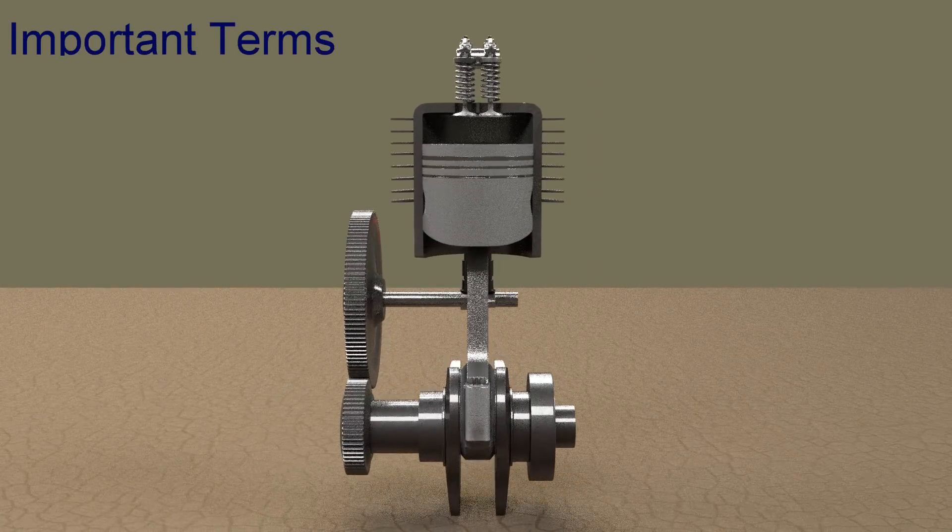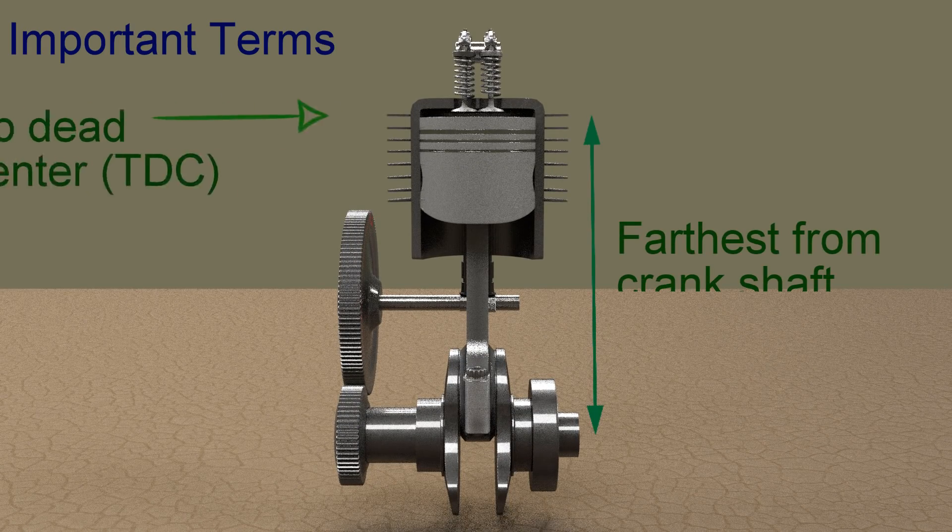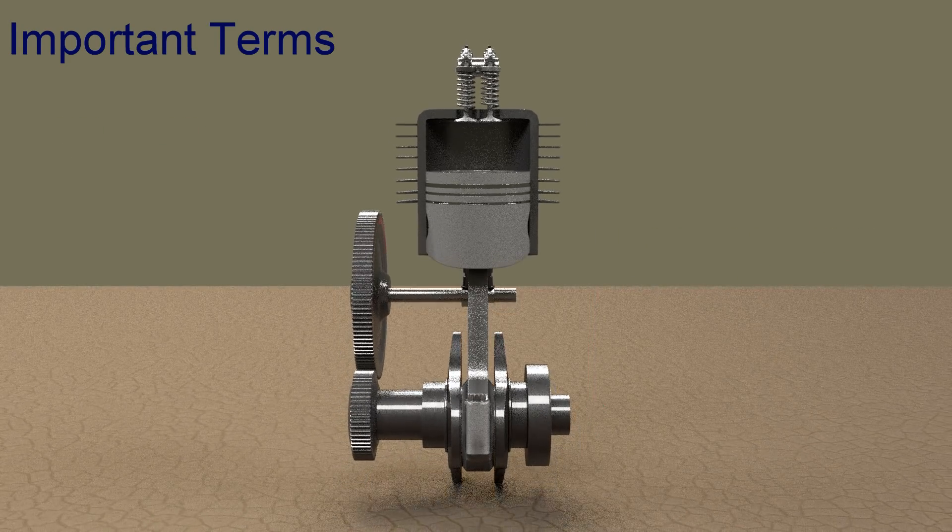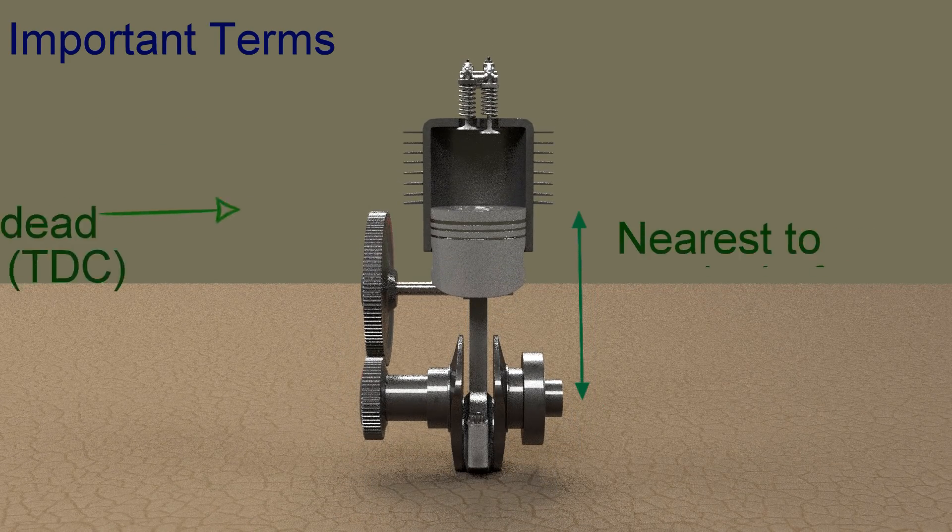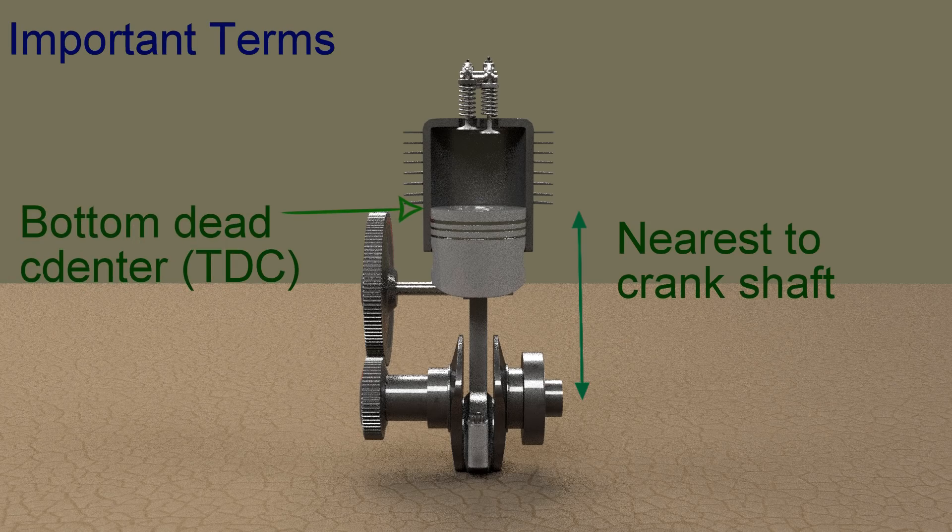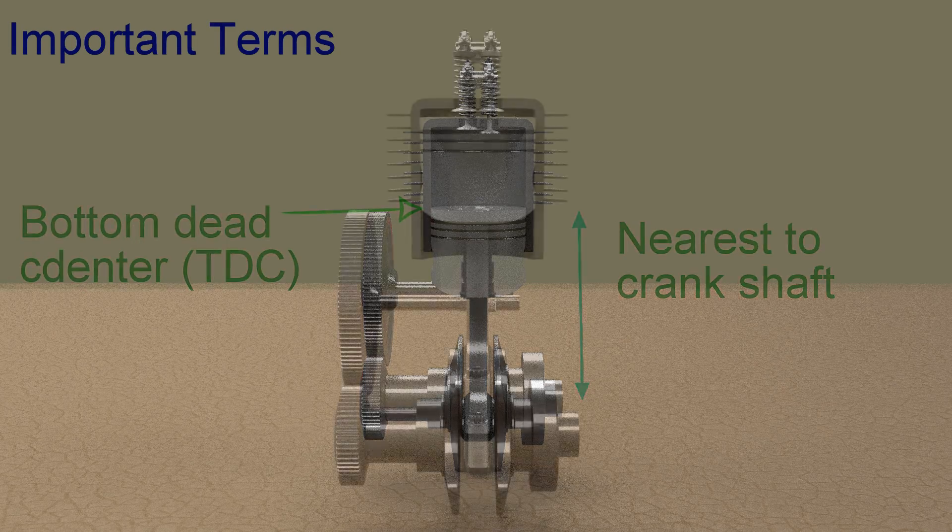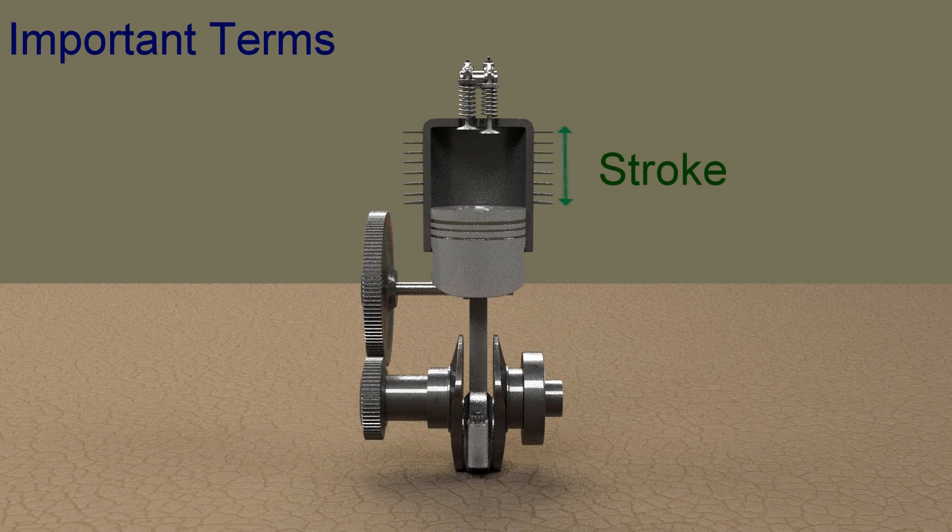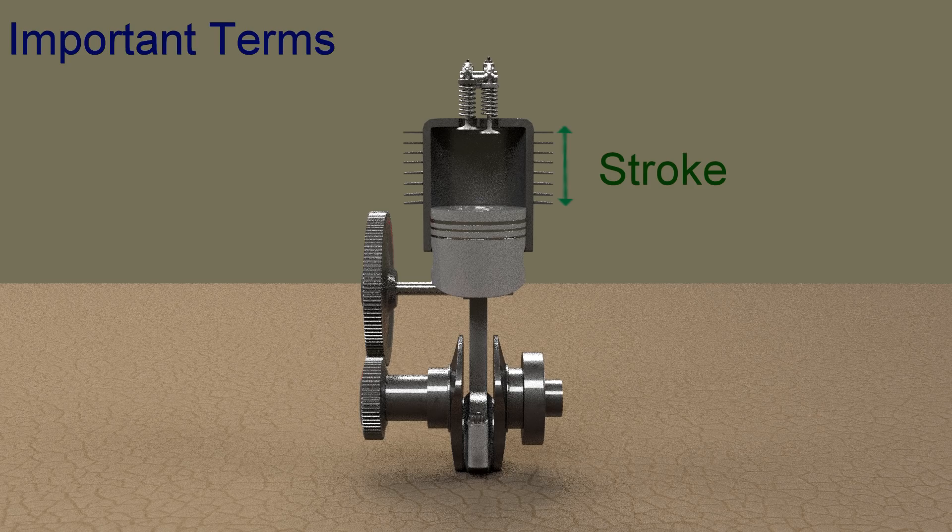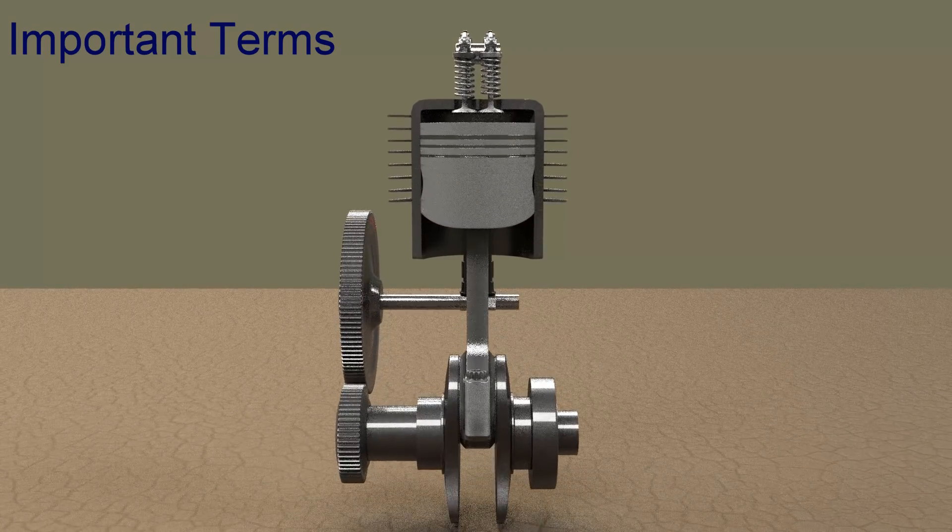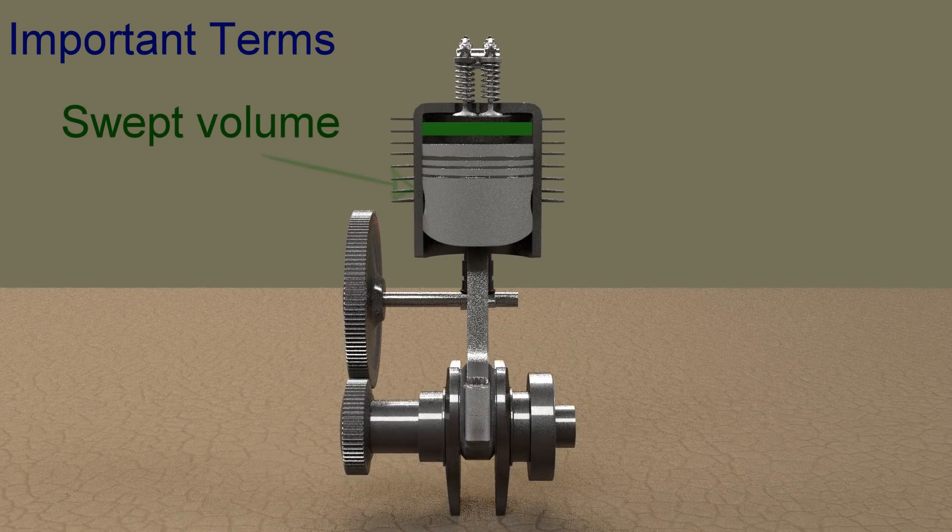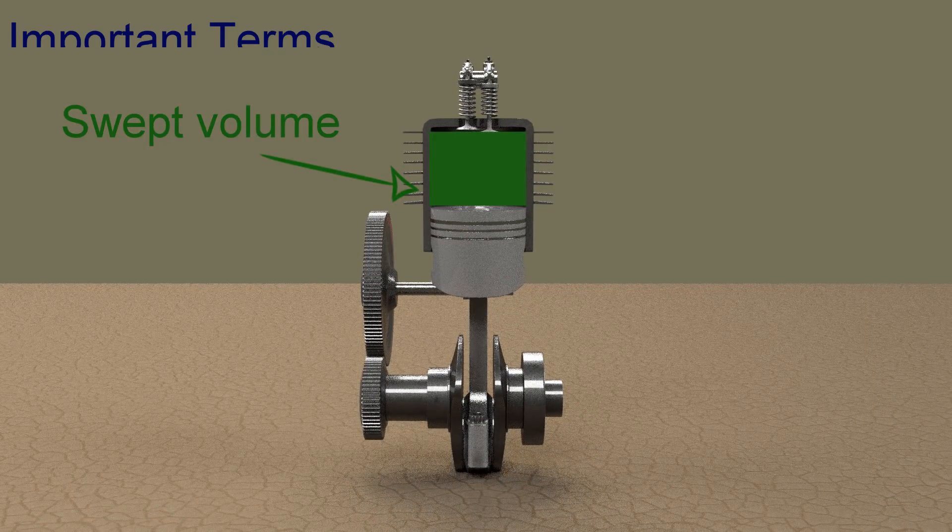Top dead center or TDC is the position of piston in which it is farthest from the crankshaft. Bottom dead center is the position of the piston when it is nearest to the crankshaft. A stroke refers to the full travel of the piston along the cylinder in either direction. There is some space left on the combustion side of piston at top dead center which is called clearance volume. Swept volume is the volume swept by the piston in one stroke.